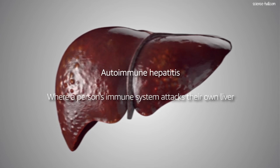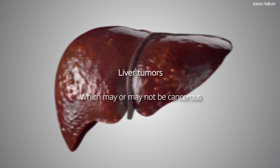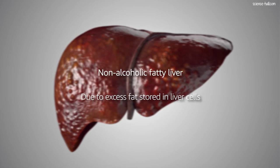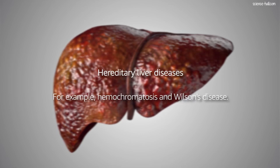Other liver diseases include amoebic liver abscess caused by the protozoa Entamoeba histolytica; autoimmune hepatitis, where a person's immune system attacks their own liver; liver tumors which may or may not be cancerous; non-alcoholic fatty liver due to excess fat stored in liver cells; and hereditary liver diseases, for example hemochromatosis and Wilson disease, in which an abnormal gene inherited from one or both parents can cause various substances to accumulate in the liver and damage it.